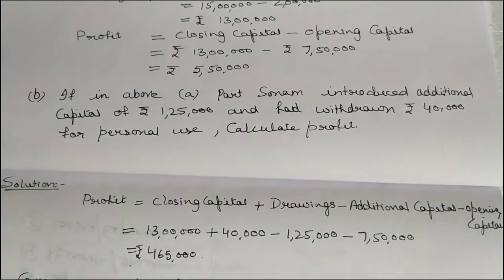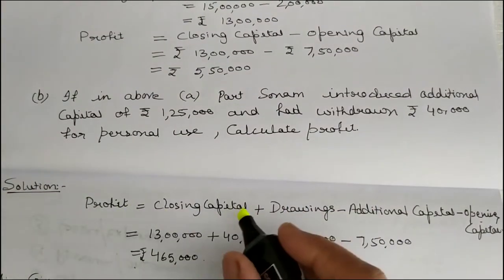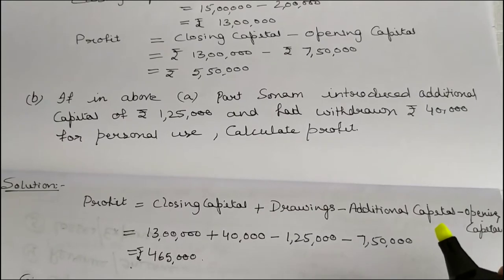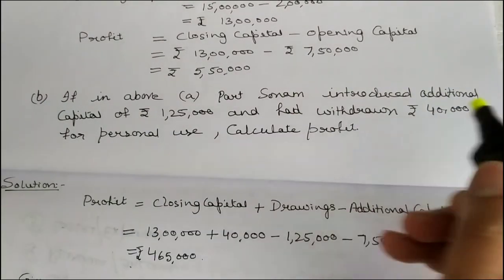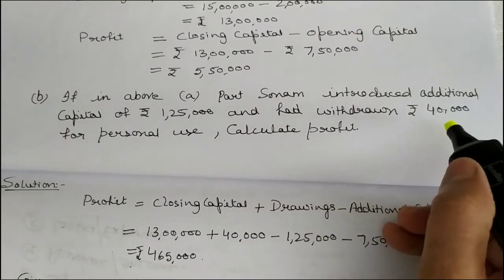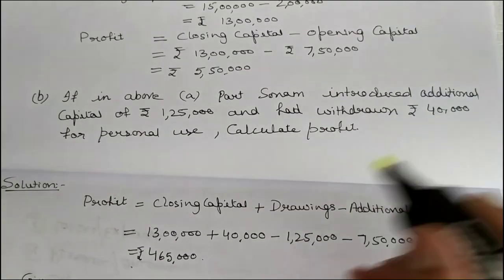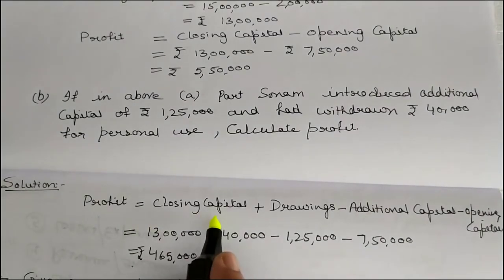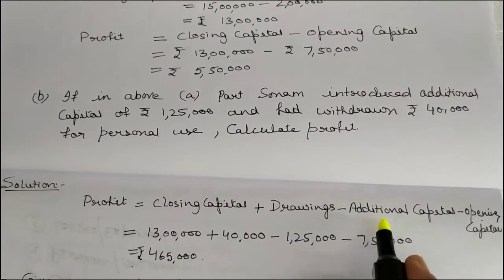So now you have to find out profit. The basic formula is profit is equal to closing capital minus opening capital. But with drawings and additional capital, the formula becomes: profit is equal to closing capital plus drawings minus additional capital minus opening capital.